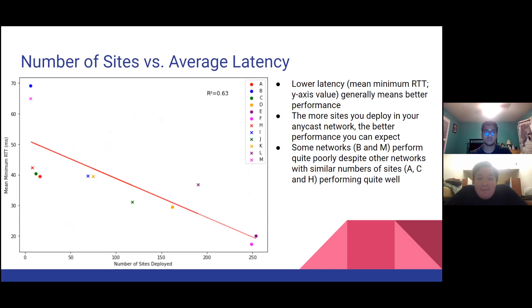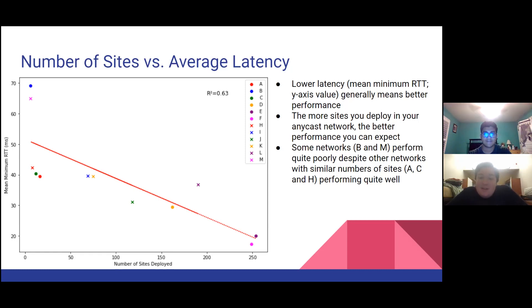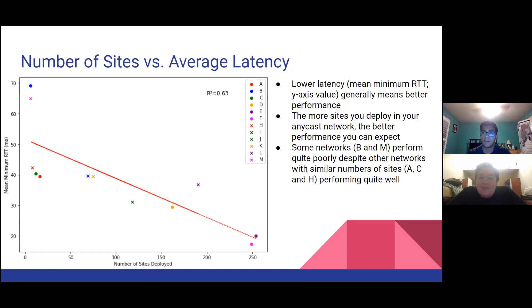On this graph, we compare that ping data to the number of sites that each Anycast network deploys, which is public information. As you can see from the trend line, the more sites you deploy, the better performance you can generally expect. Remember that lower latency — a lower value on the y-axis — refers to better performance. We can also see a couple of outlier networks, B and M, that perform quite poorly compared to other networks with a similar number of sites.